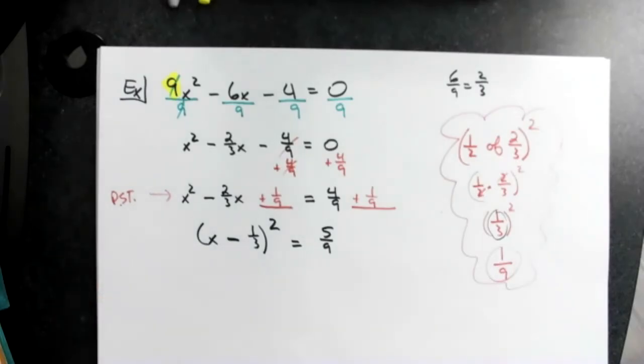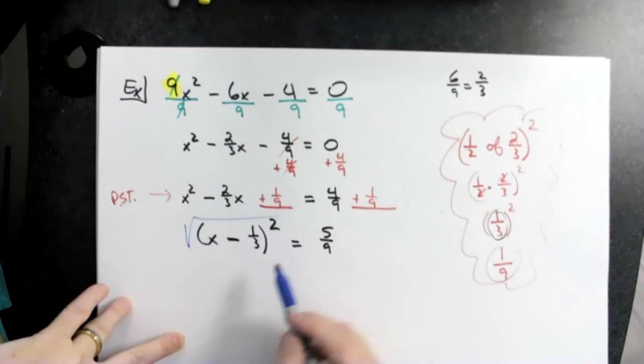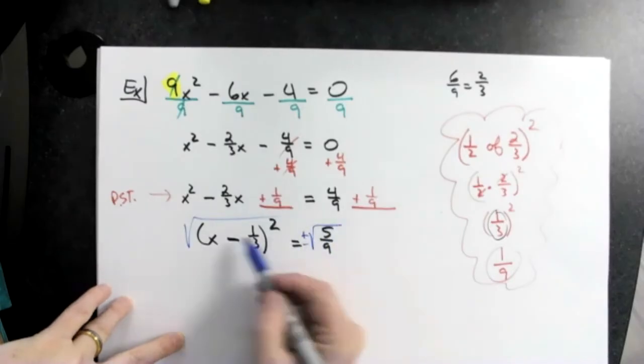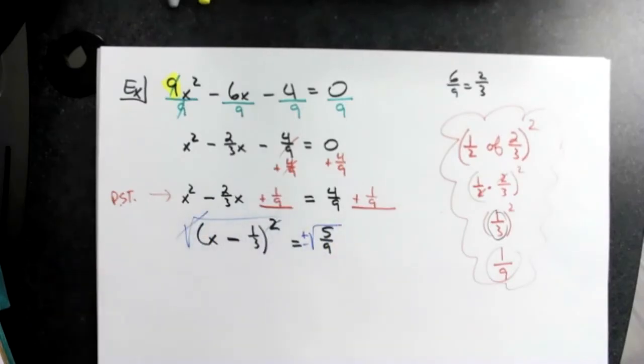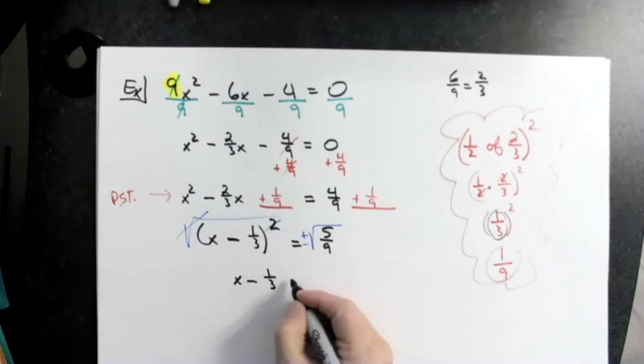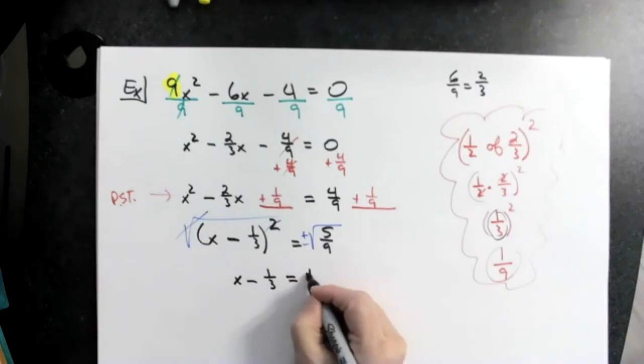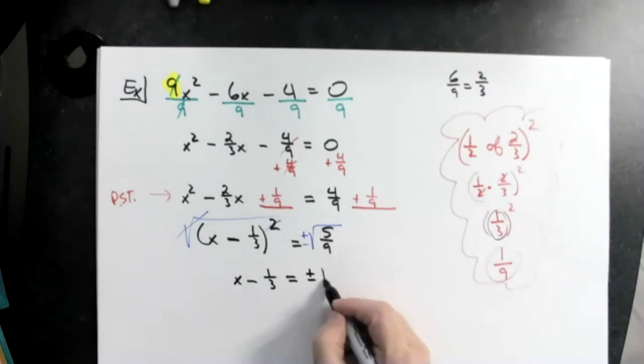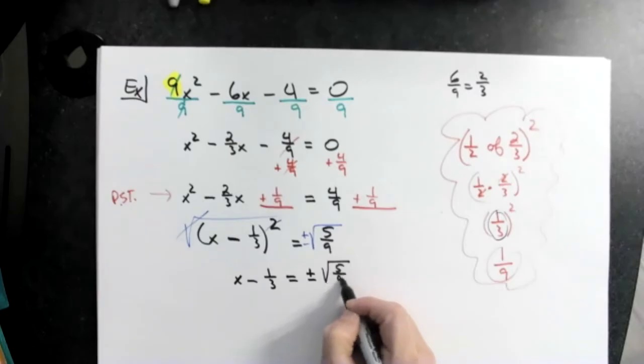Then I'm going to take the square root of both sides because now I'm just down to solving this. So let's go to a different color. I don't want to mix this up. Square root of this side, plus or minus square root of this side. Now since we've got that first one done and we know what we're doing here, I'm going to write this as x minus one-third equals plus or minus square root of five ninths.